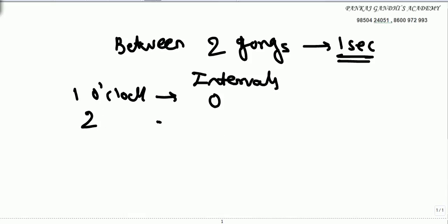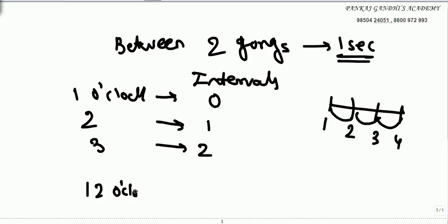At 2 o'clock, the number of intervals is 1. At 3 o'clock or 4 o'clock, if there are 4 gongs, intervals are going to be 3. So at 3 o'clock there are 2 intervals. So up to 12 o'clock, 11 intervals.